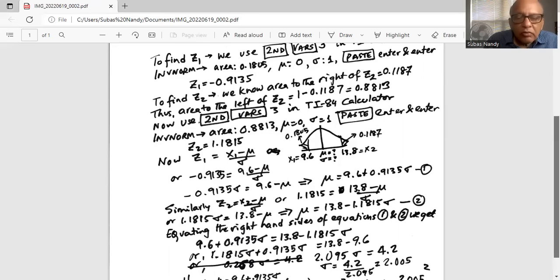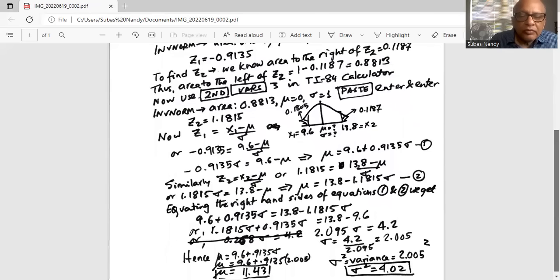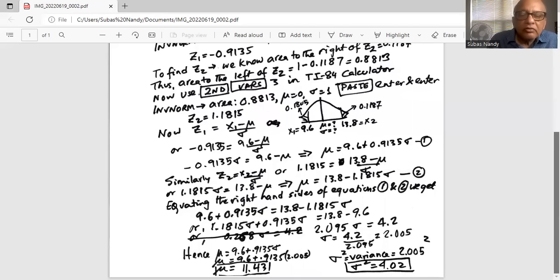Now we move all the sigmas to the left hand side and we get 1.1815 times sigma plus 0.9135 sigma is equal to 13.8 minus 9.6. Or 2.095 times sigma is equal to 4.2. We divide by 2.095 on both sides to get sigma as 4.2 divided by 2.095 as 2.005.